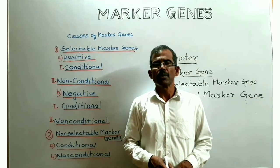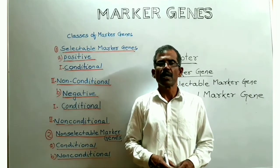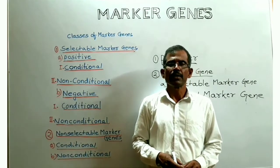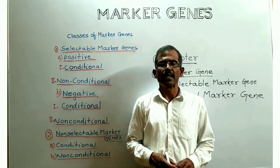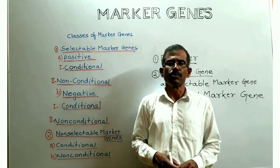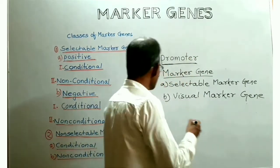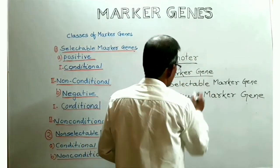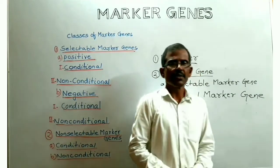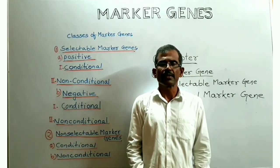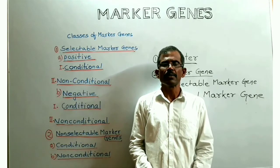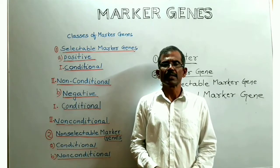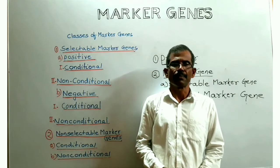The choice of promoter is crucial because it specifies where and when the transgene will be expressed in the plant tissue. The second essential segment is the marker gene. Marker genes are required for selection of the transgenic plant and are also useful to monitor the expression of the transgene.